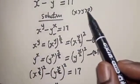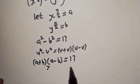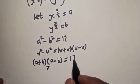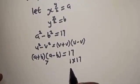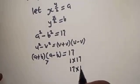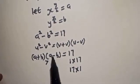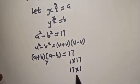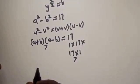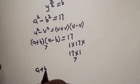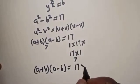Since s is greater than y and greater than 0, (a plus b) is positive and greater than (a minus b). Now 17 equals 1 times 17 or 17 times 1. Since (a plus b) must be greater than (a minus b), the assignment 17 times 1 applies — so (a plus b) equals 17 and (a minus b) equals 1.